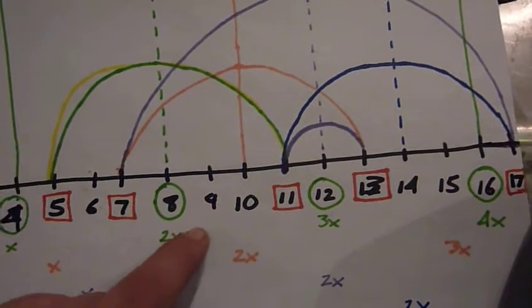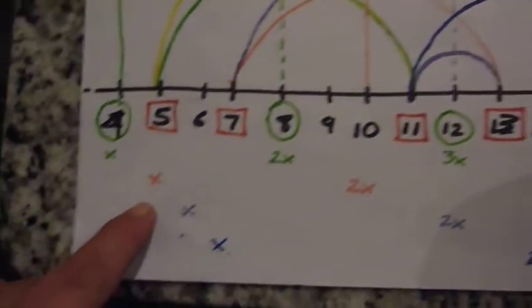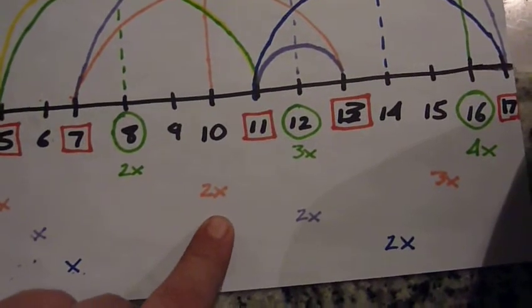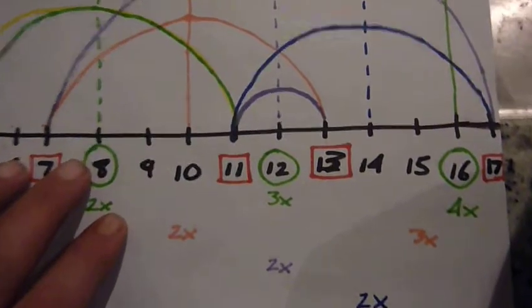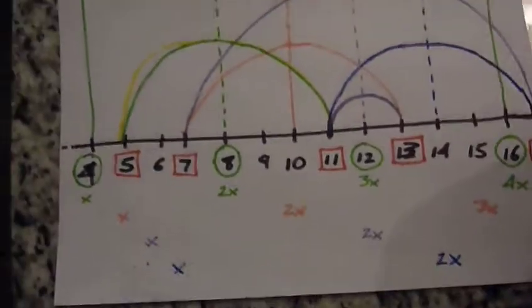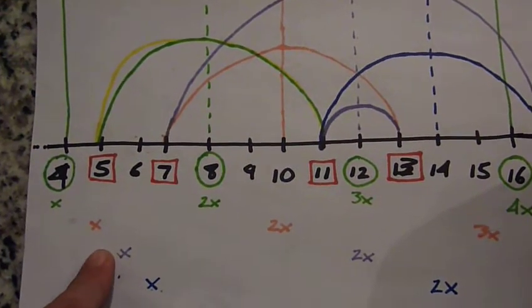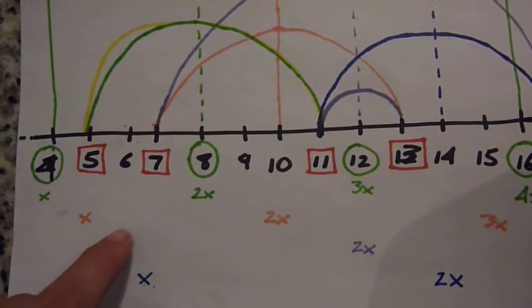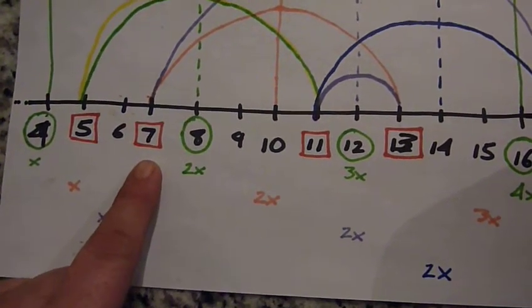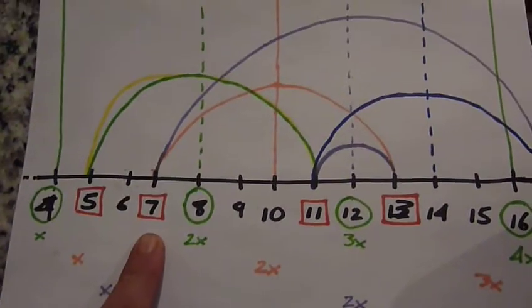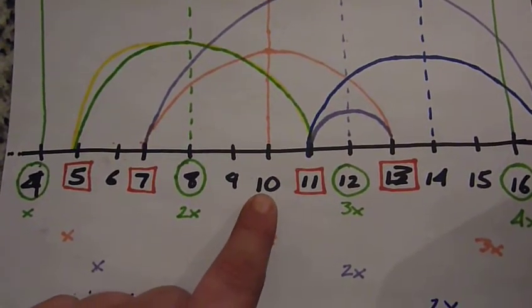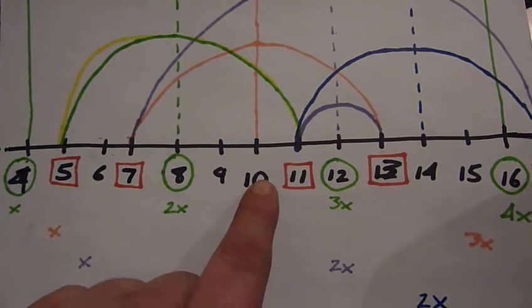Then we move up. X equals 5, 2x equals 10, 3x equals 15. Between 5 and 10, the only prime is 7. Seven is three away from 10. Three on the other side of 10 is 13.